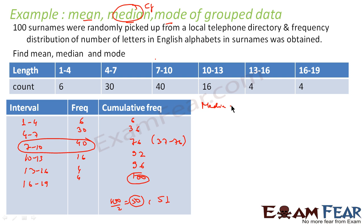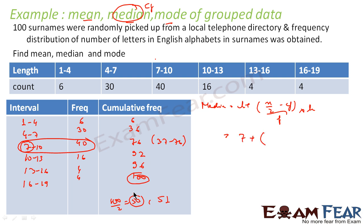The formula for median is: Median = l + (n/2 − cf) / f × h. Here, l = 7 (lower limit of the median class), n = 100, cf = 36 (cumulative frequency of the preceding class), f = 40 (frequency of the median class).